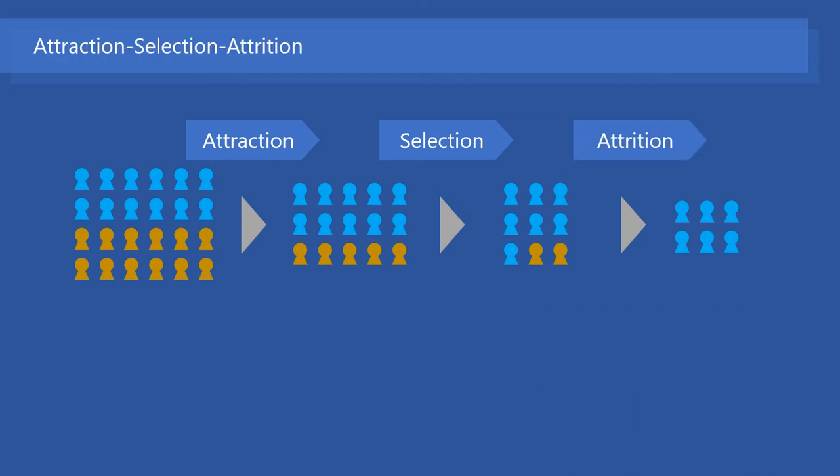Through the attraction and selection processes, organizations have already become homogeneous. Through the attrition process, the organization will become even more homogeneous.